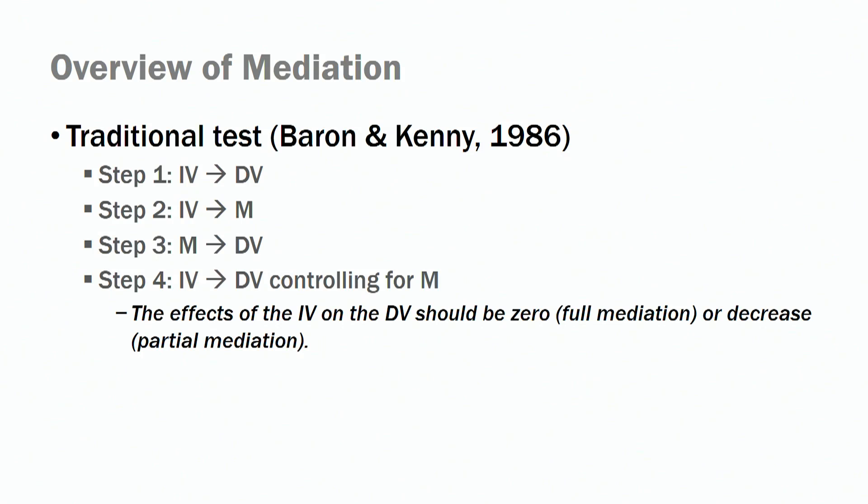The most traditional way to test for mediation came from Baron and Kenny, who published a paper in 1986 describing how we should test for mediation. According to them, the first step is to have a significant relationship between your independent variable and your dependent variable — meaningfulness and job performance. Then you move to step two: a significant relationship between your independent variable and your mediator, such as job meaningfulness and job engagement. Then step three: the relationship between your mediator and your dependent variable — engagement and job performance.